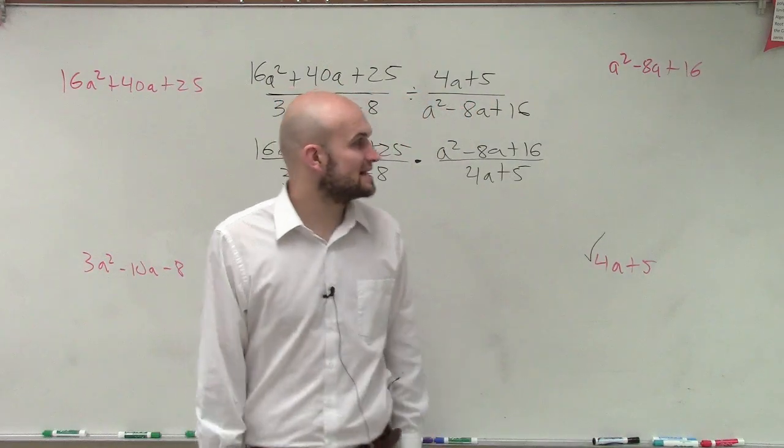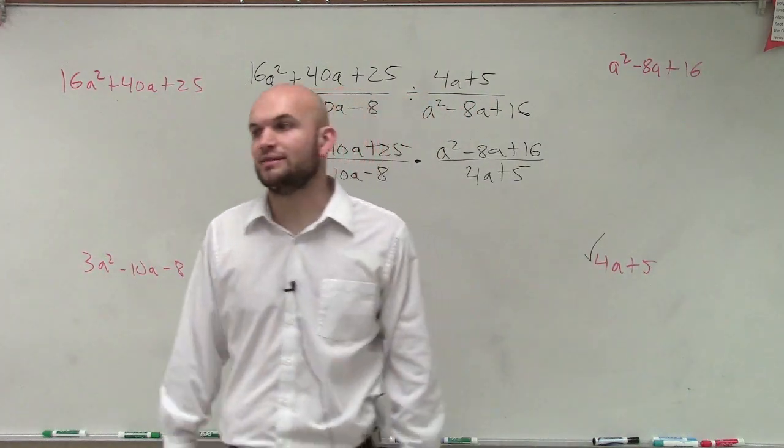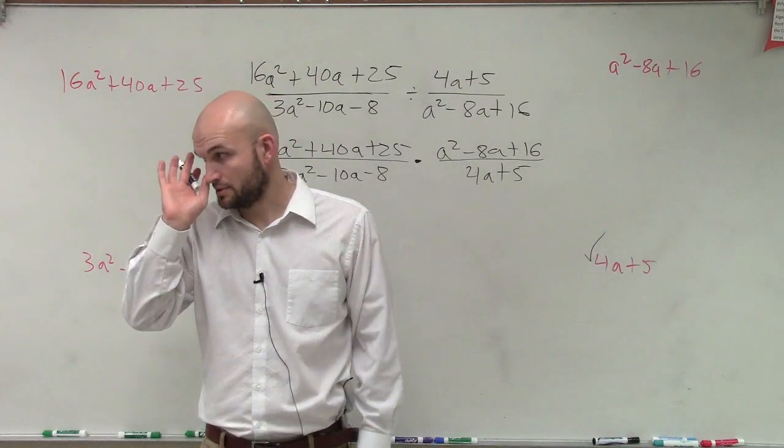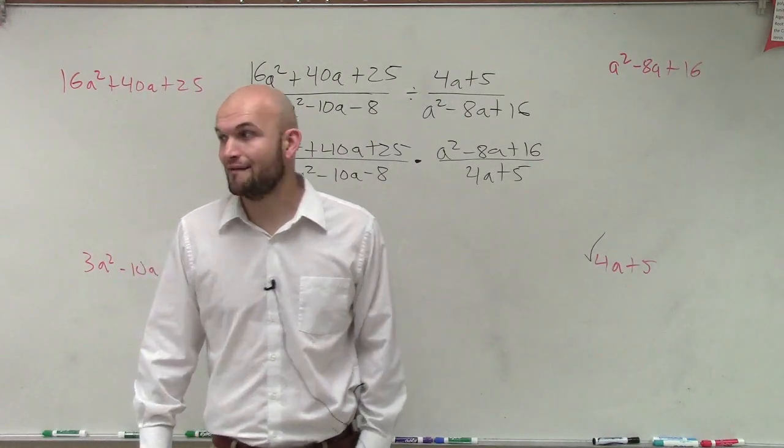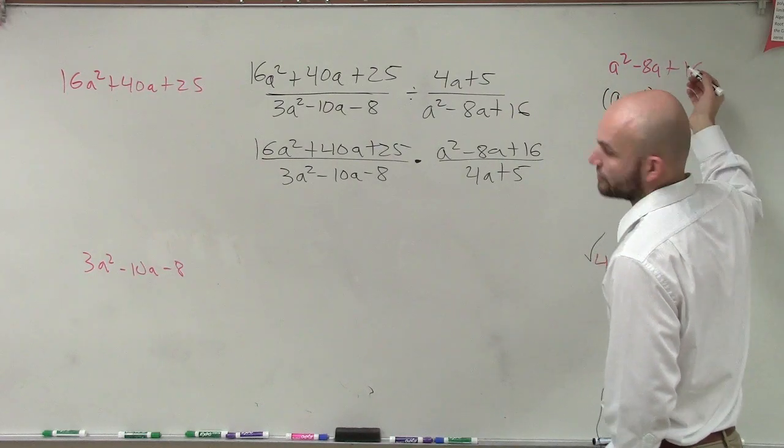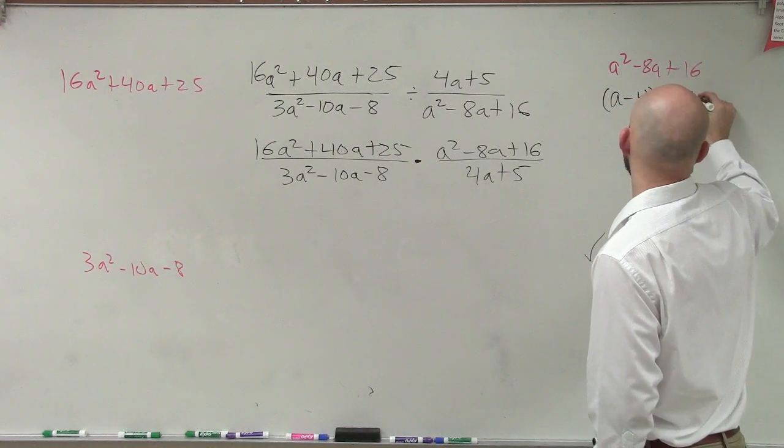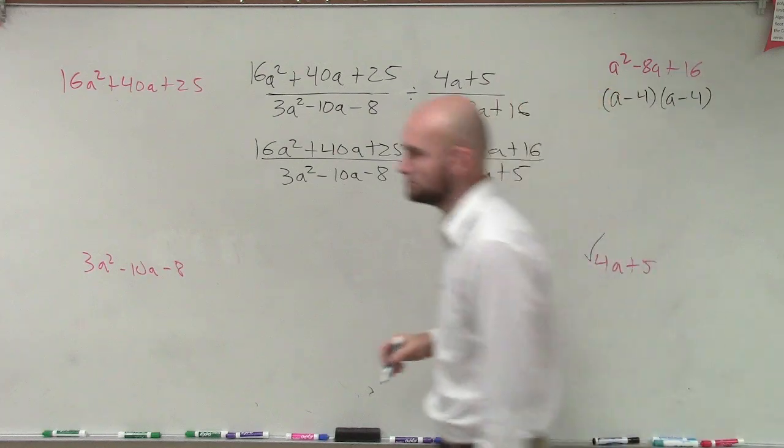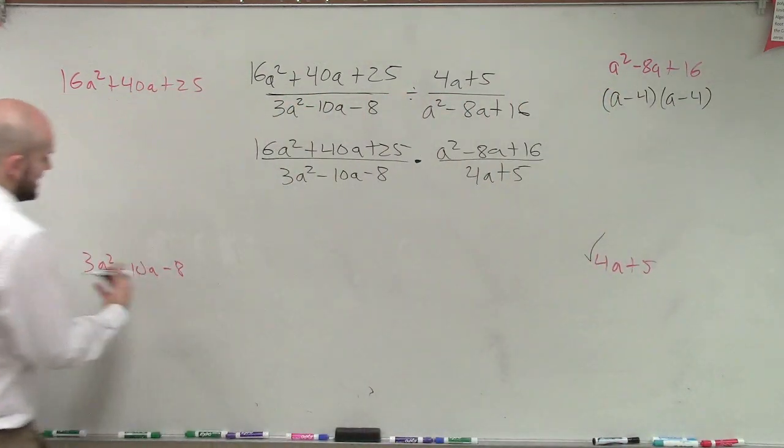Now let's go to this one. a squared minus 8a plus 16. I can rewrite that as? Anybody know the factored form of that? A minus 4, a minus 4. You can write a minus 4 squared or we can just write a minus 4 times a minus 4. Good.